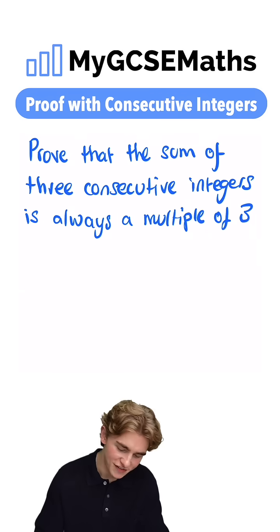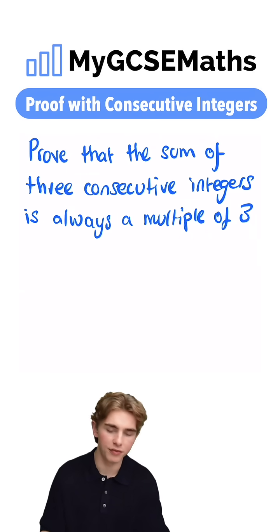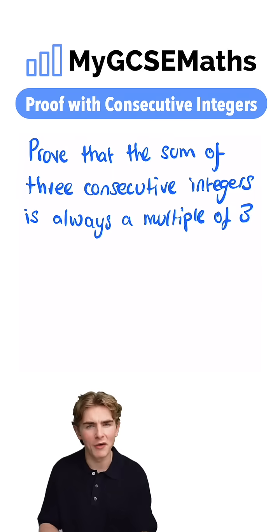Okay guys, let's have a look at this. It says prove that the sum of three consecutive integers is always a multiple of three. Now, the first question is going to be, how can we write down three consecutive integers?